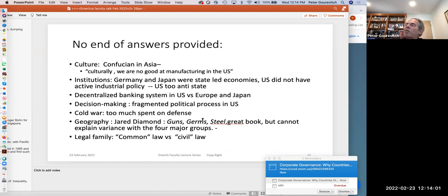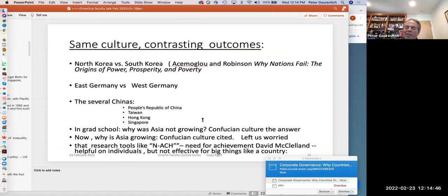Now, there were no ends of answers provided to why these things were happening in the world. The world is full of answers to big questions. Culture, like Confucianism, institutions, Germany and Japan were state-led economies, the U.S. did not have an industrial economic policy, decentralized banking system, fragmented political process in the U.S., Cold War, we spent too much on defense.